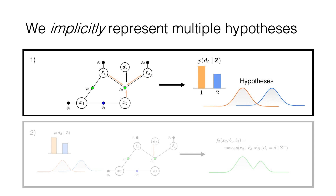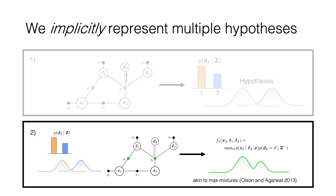Specifically, we aim to marginalize out data association variables in a way that will permit efficient inference over the remaining variables. First, we compute the approximate marginal probability of each data association hypothesis. Here we show a factor graph representing the joint distribution for two poses and two landmarks with a single ambiguous measurement. This measurement has two hypotheses, and we compute their respective probabilities by marginalizing out all pose and landmark variables. In general, this integral is intractable, but under the assumption of nonlinear Gaussian measurement noise, it can be approximated. Next, using these probabilities, we compute a max marginal over possible data association hypotheses. Max marginalization is key to our approach, as it eliminates the data association variables from the inference process. The resulting factor, which we term a semantic max mixture factor, corresponds to a mixture over hypotheses — as in prior work on max mixtures — with weights summarizing semantic as well as geometric information associating the measurement to each candidate landmark. For more of the mathematical details, we encourage you to check out our paper.